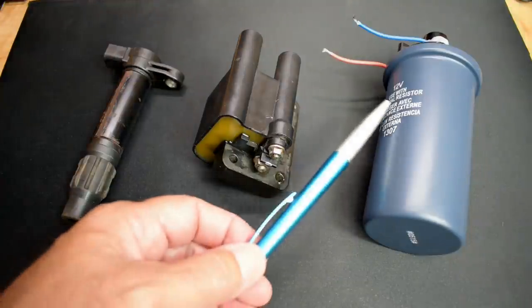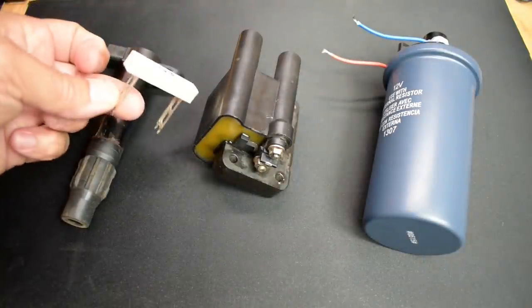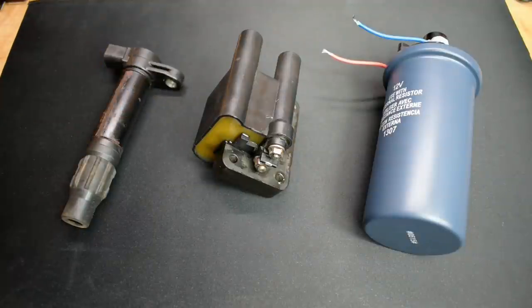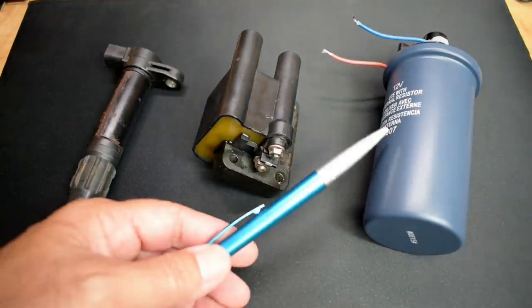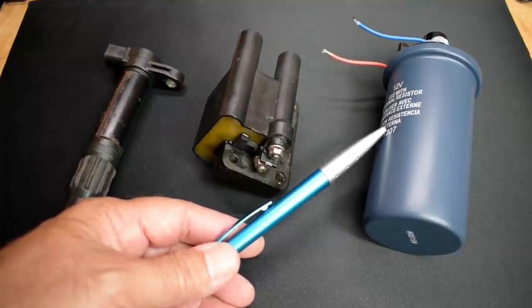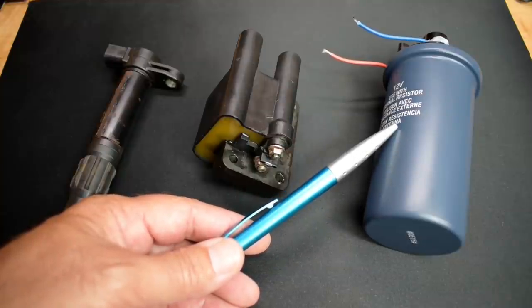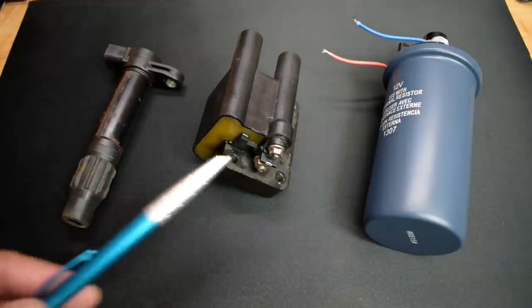Over here, this one says use with external resistor. Like you see right here, this is a 1 ohm 10 watt resistor. The purpose of that resistor is to reduce the amount of current going into the primary winding of the coil. When you reduce the amount of current, you're going to reduce the heating in the coil and greatly extend the life of the ignition coil.